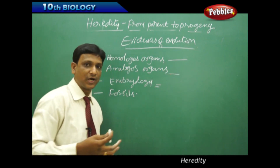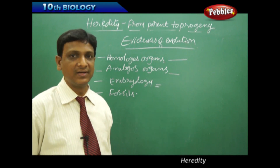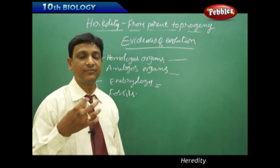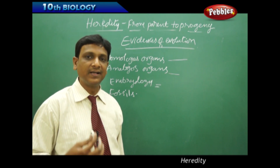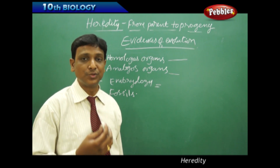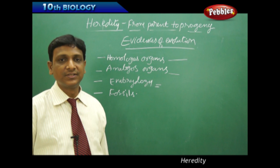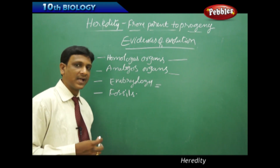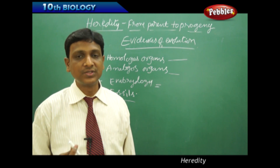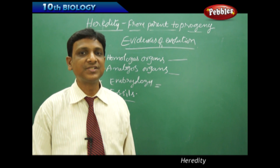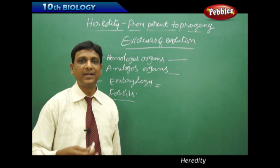If you observe the homologous organs' internal anatomy, you will find the same kind of bone arrangement, which gives evidence that different species are somewhere related. Embryology is another thing which gives evidence. If you observe the embryos of frogs, fish, humans, and different animals, even a great embryologist finds it difficult to identify which is the human embryo, which is the frog embryo, which is the fish embryo in the early stages, because all embryos are of similar appearance. This strengthens the theory of evolution.